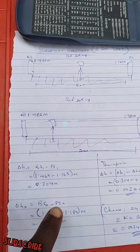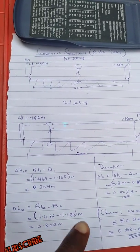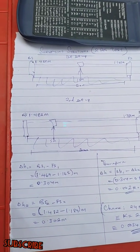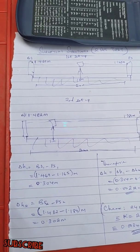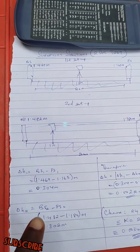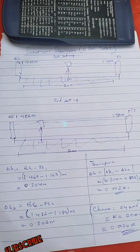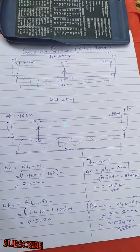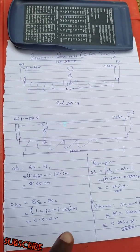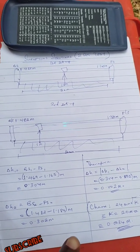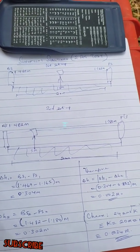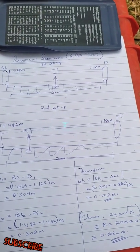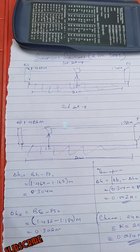Then the change in h2 will be for the second setup: 1.482 minus 1.180. So by the time you use your calculator, you will get something like 0.302 meters. Therefore, the change in h, which will be like the error, will now be change in h1 minus change in h2.